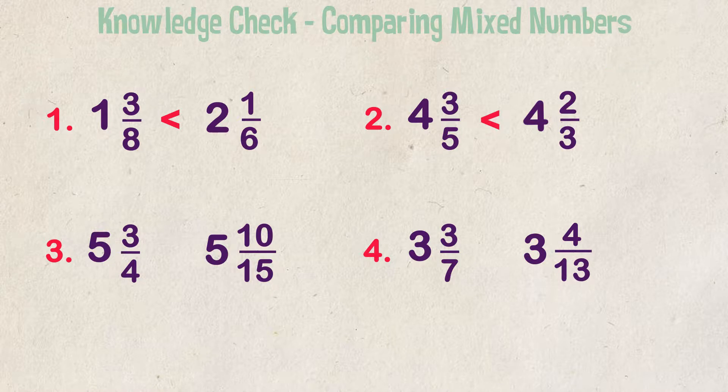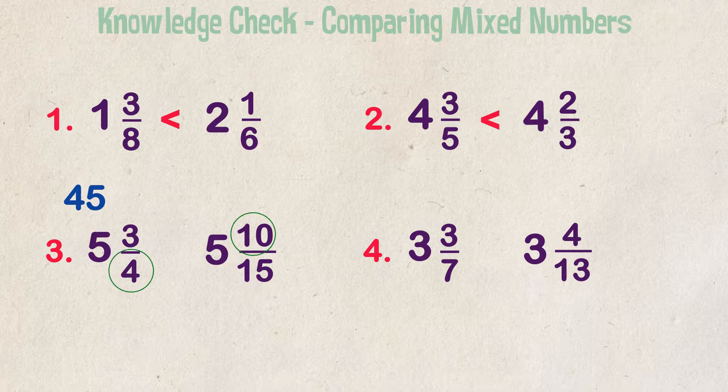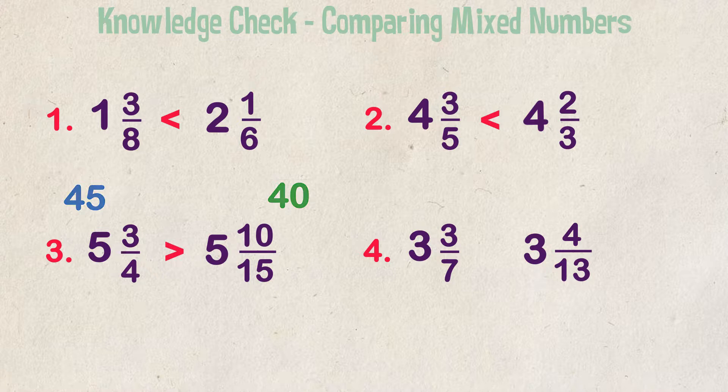Example 3. Compare 5 and 3 fourths to 5 and 10 fifteenths. Both whole numbers are the same, so let's isolate our proper fractions. We multiply 3 times 15, and we get 45. We multiply 4 times 10, and we get 40. 45 is greater than 40, so 5 and 3 fourths is greater than 5 and 10 fifteenths.